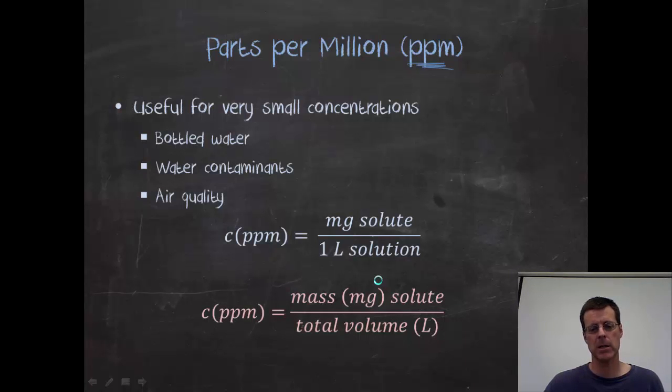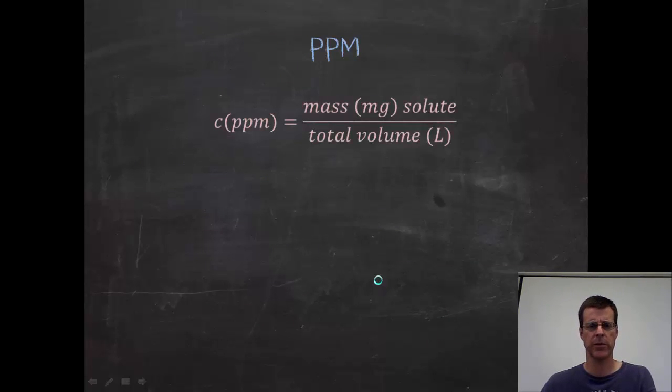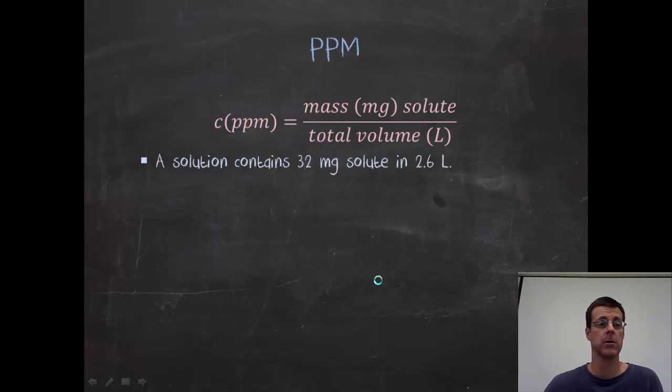And we would find the mass in milligrams divided by the total volume, and that's going to be our concentration. Well, what if you don't have mass in milligrams? What if you have mass in grams? If you have mass in grams, then parts per million is probably not the concentration unit style you want to use. Percentage would probably be your best bet. So as a question, we've got that as our basic formula. So if you've got 32 milligrams of solute and 2.6 liters of water, you put these solutes over liters, you get 12.3.